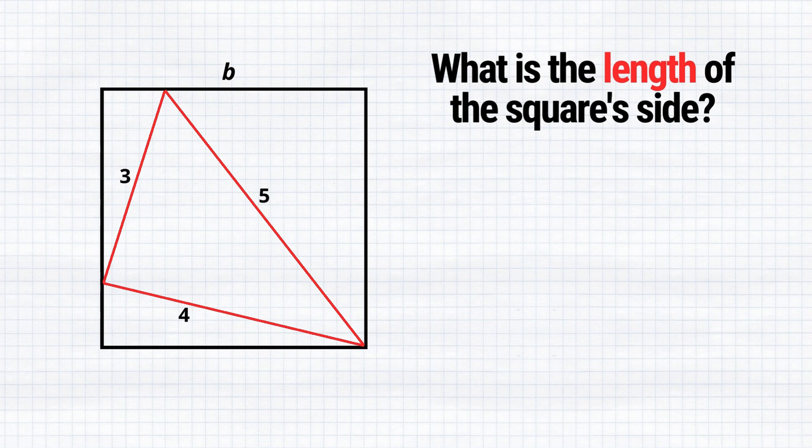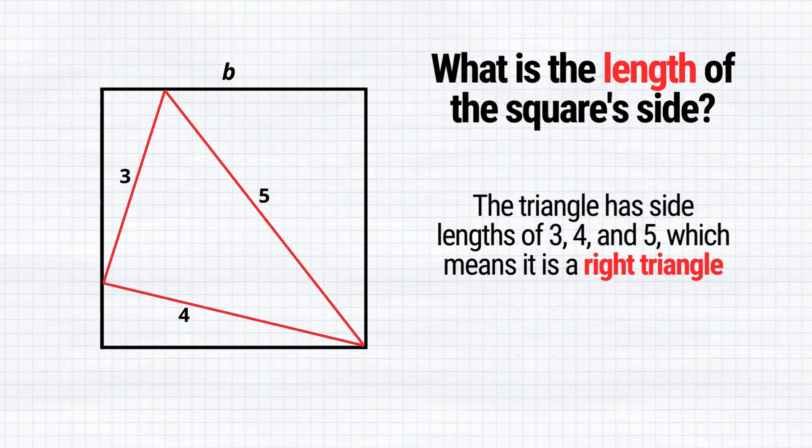So, let's begin with understanding the type of triangle we have. As you might have noticed, the triangle has side lengths of 3, 4, and 5, which means it is a right triangle. So, the angle between the sides 3 and 4 is 90 degrees.